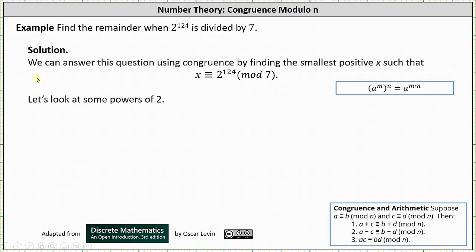We begin with 2 to the first. 2 to the first is congruent to 2 mod 7 because when 2 is divided by 7, the remainder is 2. 2 to the second is congruent to 4 mod 7, since 2 squared or 4 has a remainder of 4 when divided by 7.